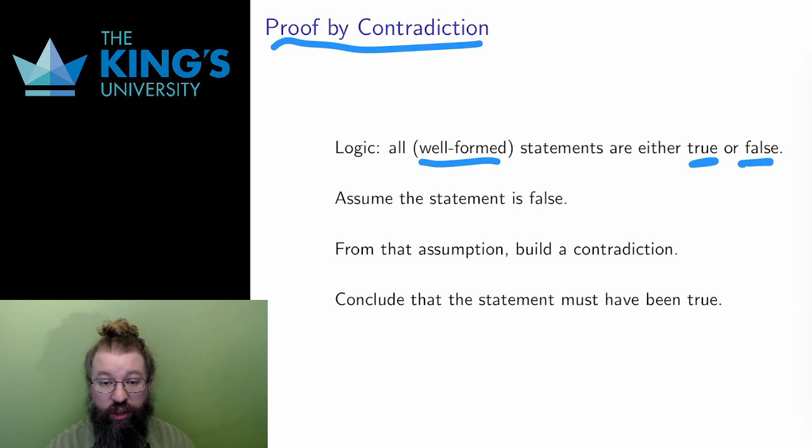To prove by contradiction, I assume that the statement I want to prove is in fact false. Then, starting from that assumption, I make logical conclusions. These logical conclusions will lead me on to an impossible situation, a contradiction.